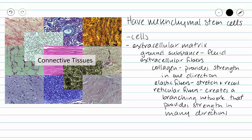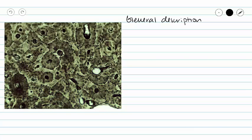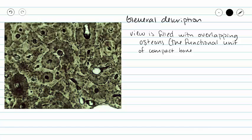These are all of our unifying characteristics of connective tissues. In this video, we are going to be looking at compact bone. So let's take a look. I'm going to draw you an osteon and then we will identify all of the parts, and then we'll point out those parts on our picture.